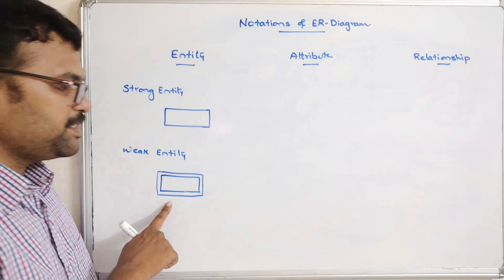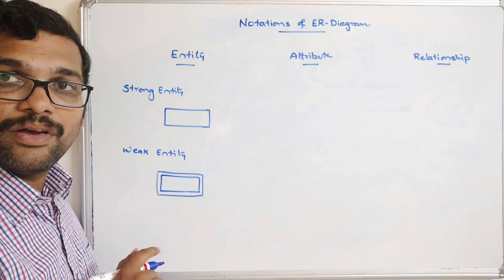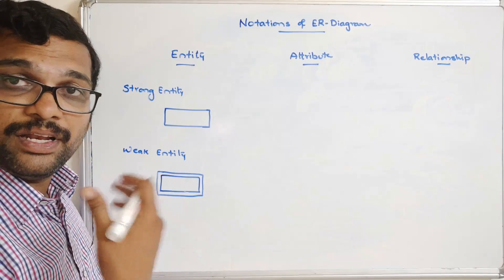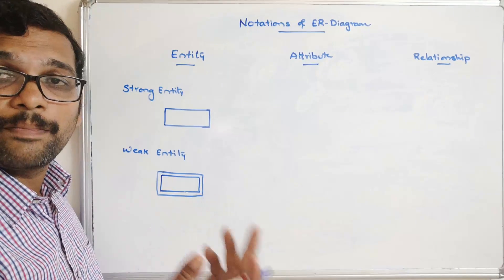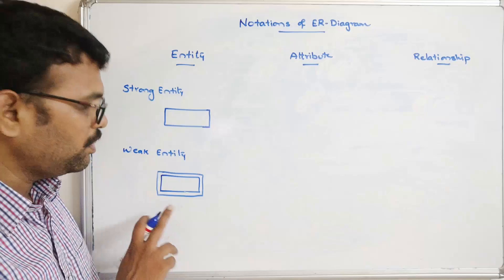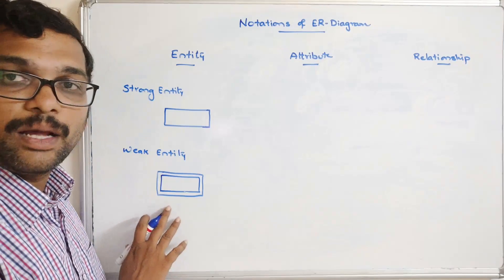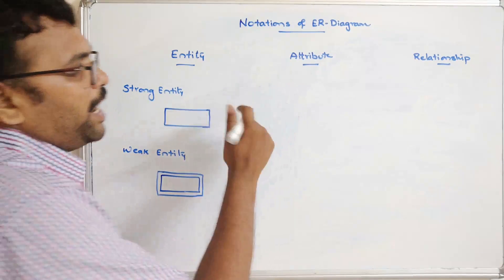If in our ER diagram we want to represent any weak entity, we have to draw this double rectangle. Coming to the attributes, the first one is the key attribute.